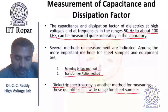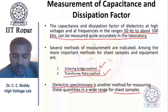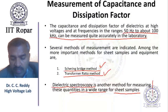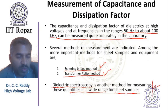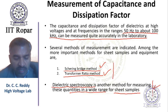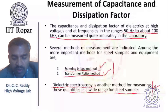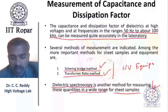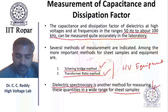The Schering bridge and transformer ratio arm bridge methods are more popular in high voltage labs. Dielectric spectroscopy is used for dielectric studies and can be used for a wide range of frequencies but only for small samples. The Schering bridge and transformer ratio arm bridge can even be applied to high voltage equipment, not only sheet samples of dielectrics.